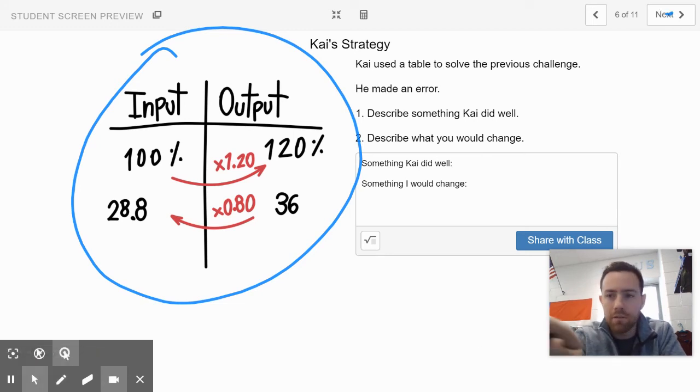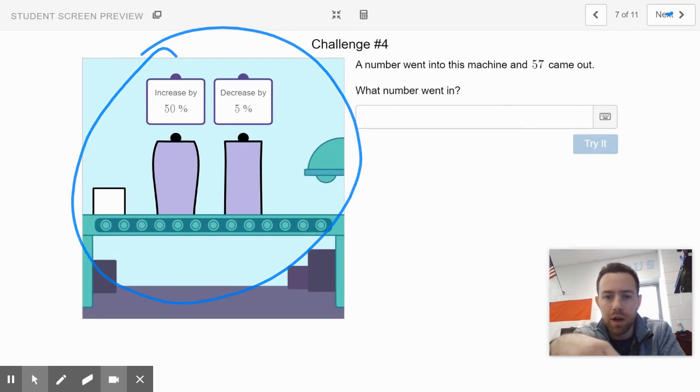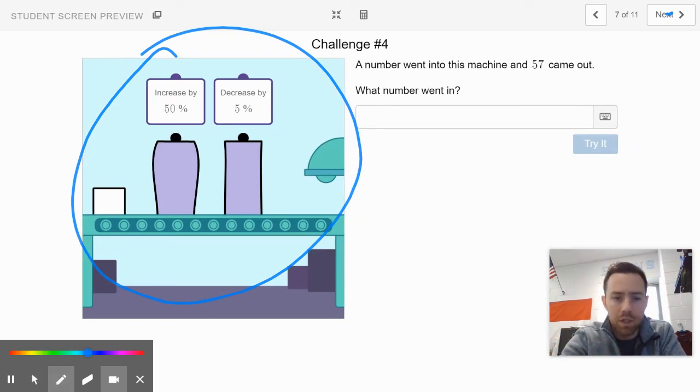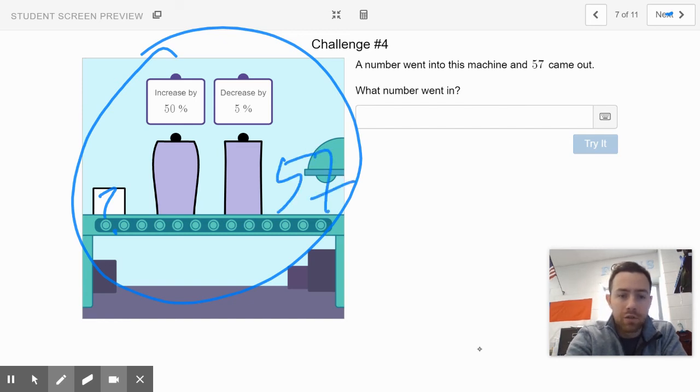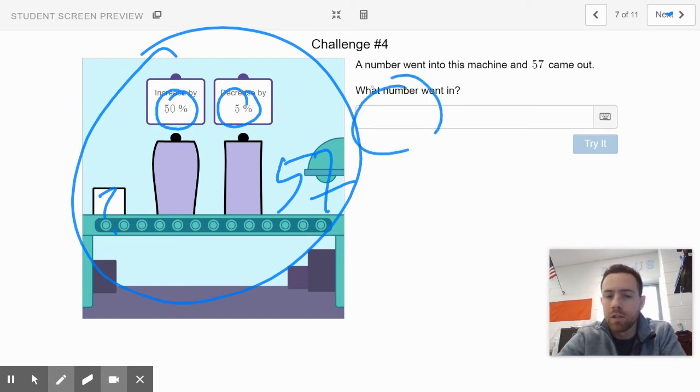Finally, on slide seven, we'd like for you to do this final challenge. It says a number went in this machine. We don't know what the number is, but we know that 57 came out, and in this case two things happened to it. It increased by 50 percent and then it decreased by 5 percent. What number do you think went in there? Slide seven is probably the most challenging one so far. Go work on six and seven and then come back to Edpuzzle.